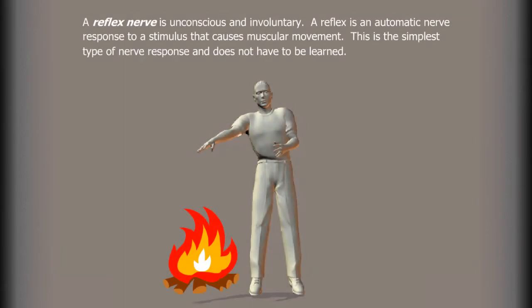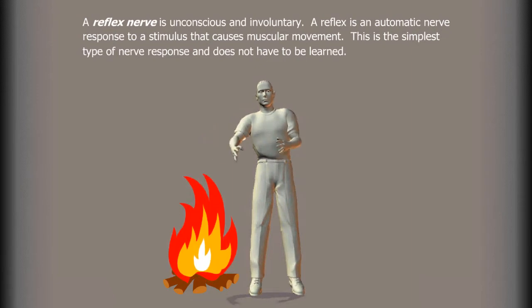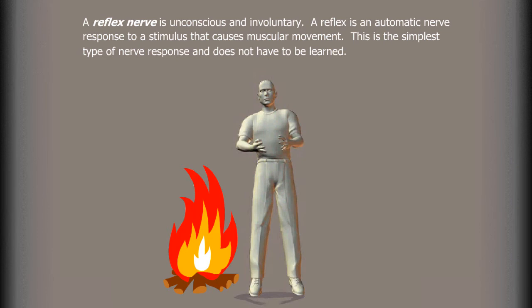A reflex nerve is unconscious and involuntary. A reflex is an automatic nerve response to a stimulus that causes muscular movement. This is the simplest type of nerve response and does not have to be learned.